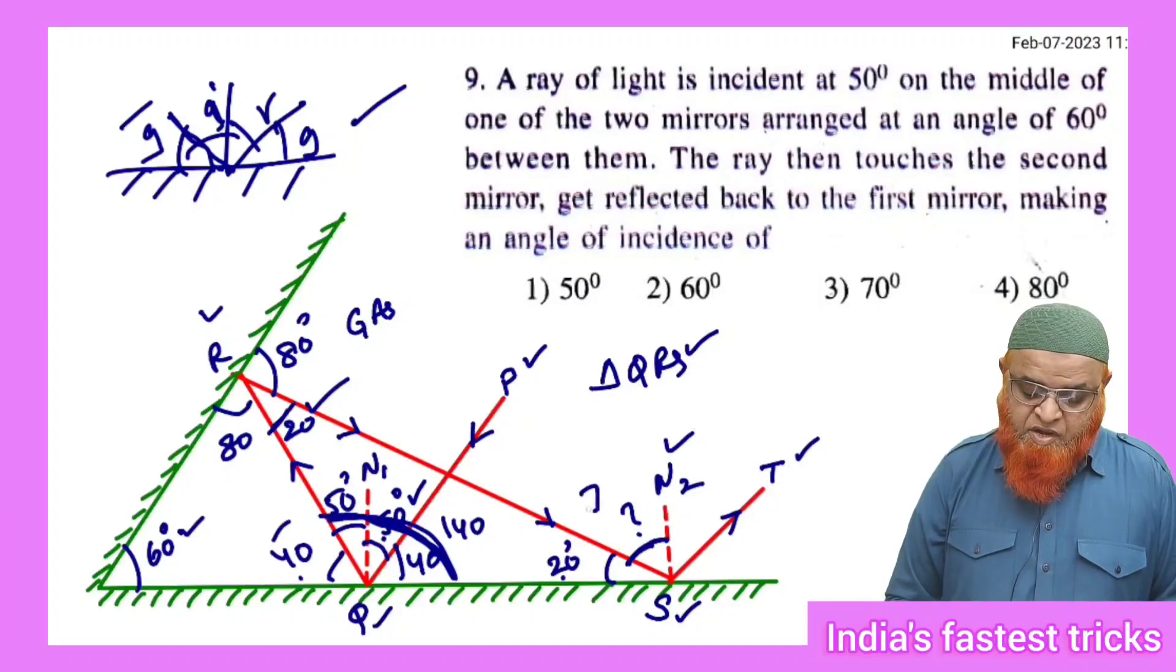If this is 20, and this is going to be a normal, this is going to be 70 degrees. This is going to be your answer.